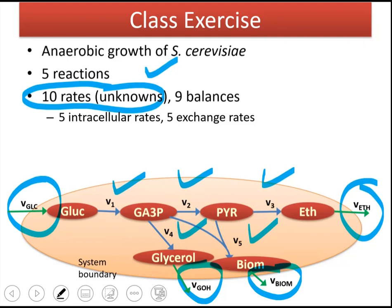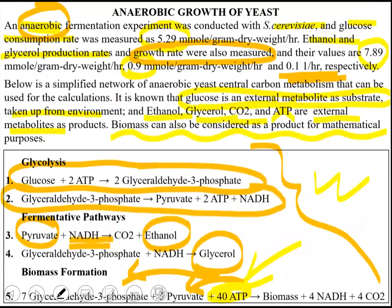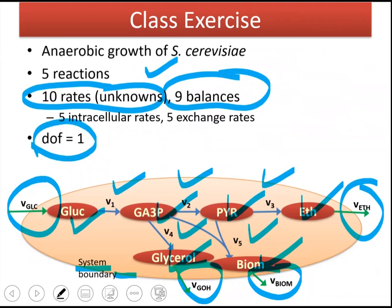What is the number of balances? We write balances around metabolites within our system boundary. We count six metabolites depicted in the figure, plus ATP, NADH, and carbon dioxide — giving us nine balances, nine equations. This means the degrees of freedom is one. So if we specify the value of one unknown, we can predict all the other rates in this system. We will specify the glucose uptake rate as measured.